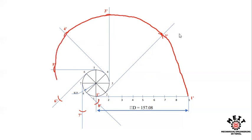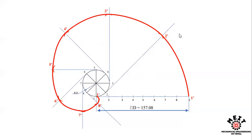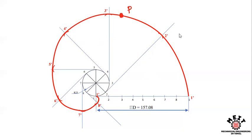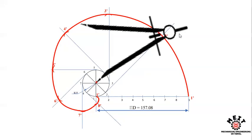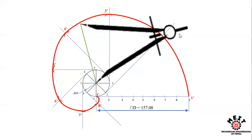How do you make the tangent and normal? In this circle, we can draw a tangent and normal. The point on the curve is at 80mm from the center. If you have a compass, you can use it at the center. Connect the center point — the line length is from the center point to the curve point.